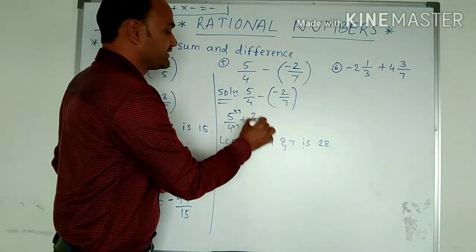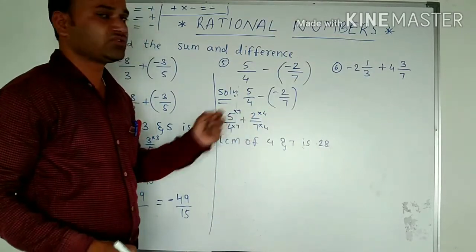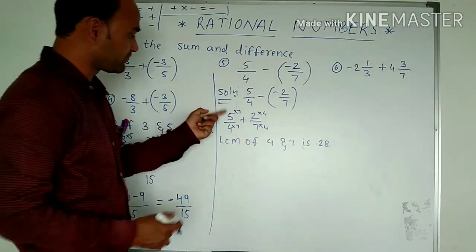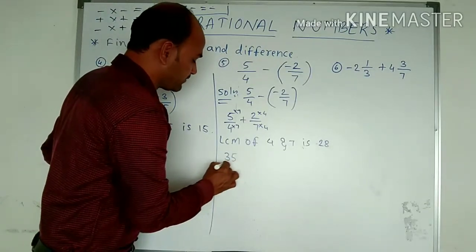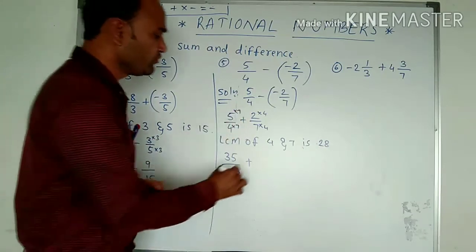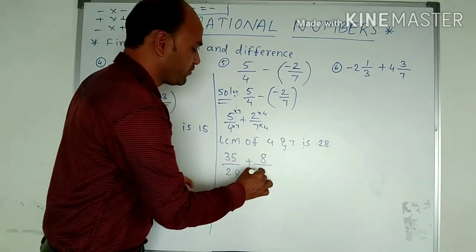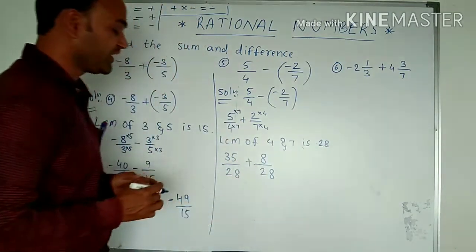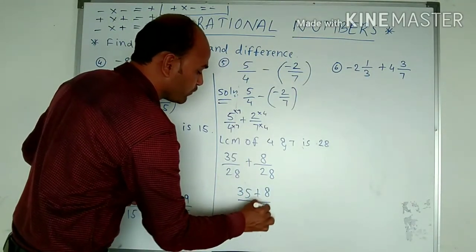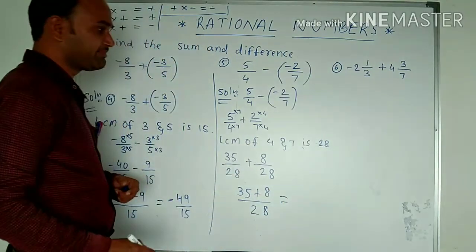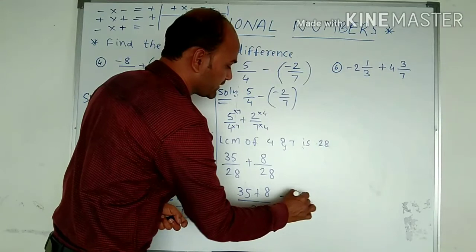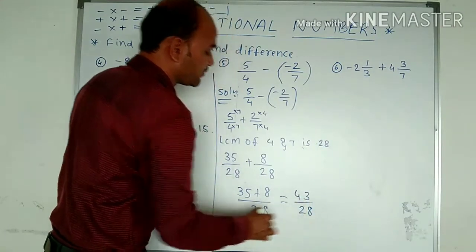7 times 4 is 28. If multiplying with the denominator, you also multiply the numerator. So 5 times 7 is 35, divided by 4 times 7 is 28, plus 2 times 4 is 8, divided by 7 times 4 is 28. Next we have 35 plus 8 divided by 28. 35 plus 8 becomes 43, so 43 upon 28 is the answer.